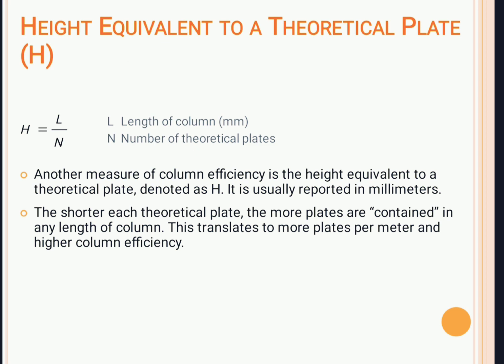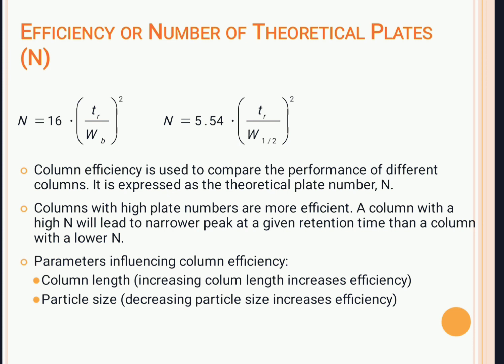The height equivalent to a theoretical plate is represented by H, where H = L / N. L is the length of the column (in millimeters, centimeters, or meters) and N is the number of theoretical plates. H measures the ratio of column length to the number of theoretical plates and is used to measure column efficiency. The shorter each theoretical plate, the more plates are contained in any given length of column — more plates per meter means higher column efficiency.